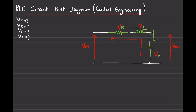So first of all let's find out the total voltage of this circuit. We know VT can be taken from V in because that is our input voltage, which is equal to the total voltage. That is equal to the voltage drop across the resistor plus the voltage drop across the capacitor and the voltage drop across the inductor. And that is our equation number one.